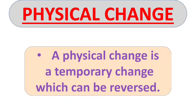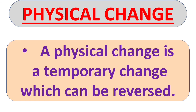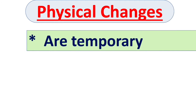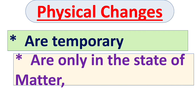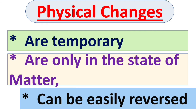First is physical change. A physical change is a temporary change which can be reversed. As the name suggests, only the physical appearance of the matter changes, not the chemical. Key points: the change that takes place is temporary; it changes only the state of matter, meaning only physical properties like shape, size, color, and volume change, but not the chemical properties. And the change can be reversed.